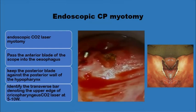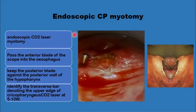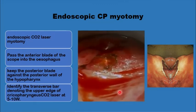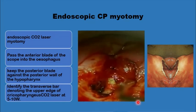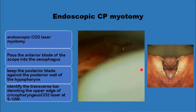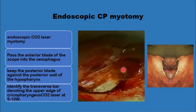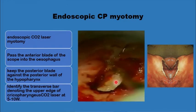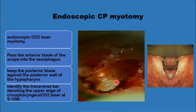The endoscopic myotomy starts with placing the Weerda scope: the anterior blade stretches the inlet of the oesophagus and the posterior blade rests on the hypopharyngeal posterior wall. Carbon dioxide laser is then used to divide the muscle together with its covering mucosa down to the buccopharyngeal fascia — the limit of the myotomy. The buccopharyngeal fascia should be preserved to avoid perforation of the pharynx and oesophagus and the potential for mediastinitis.